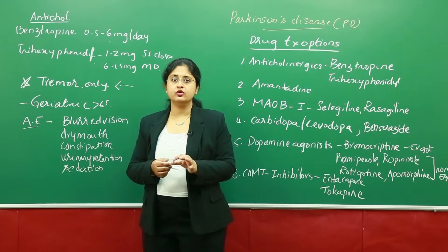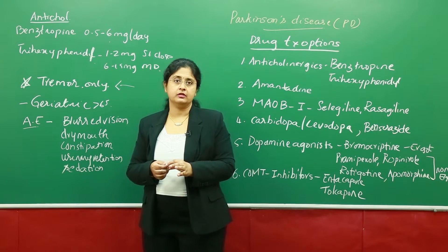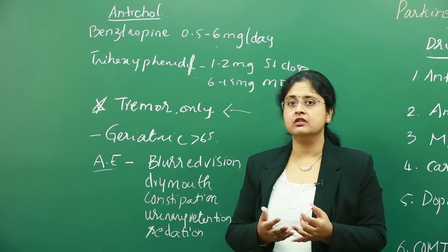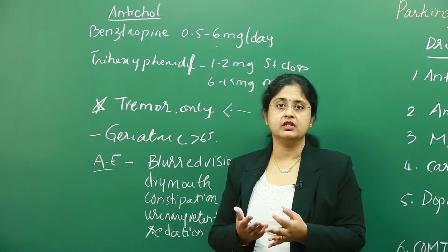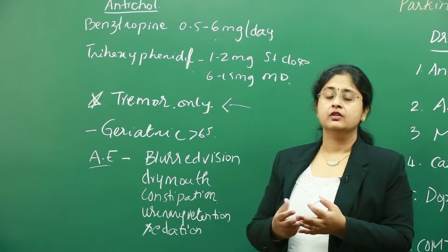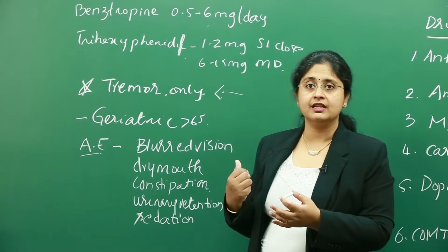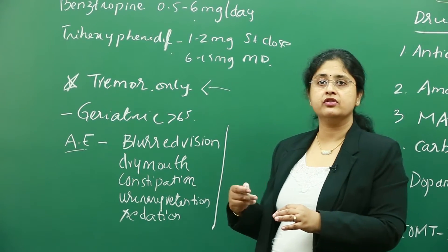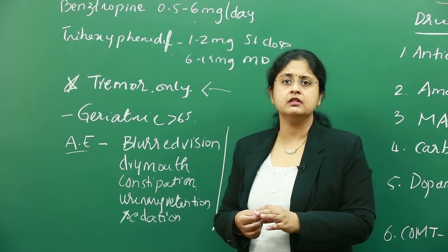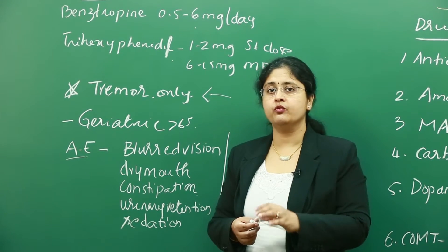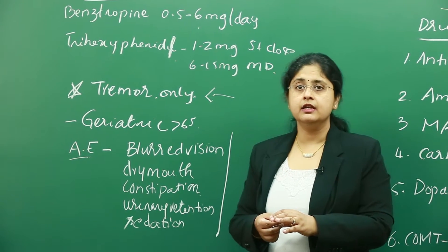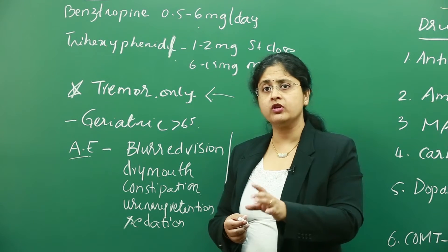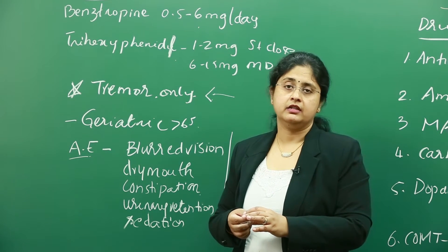At the same time, we must give importance to adverse effects. Most of our Parkinson's population will be elderly, and they already have issues such as urinary retention, constipation, and memory problems that come with aging. When we use anticholinergics in them, all these adverse effects worsen — blurred vision and other anticholinergic effects are commonly seen. So we must consider the patient's age and existing problems before starting anticholinergics.